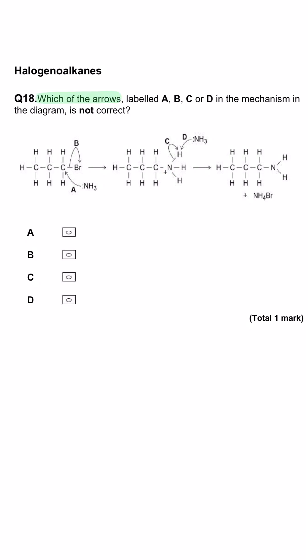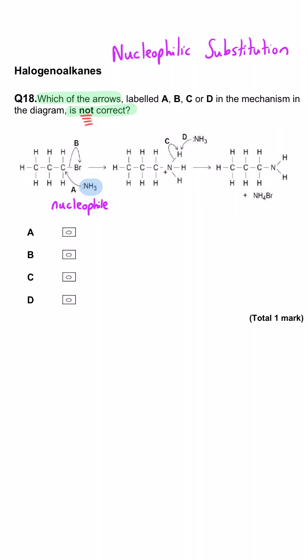Which of the arrows A, B, C, or D in the mechanism shown in the diagram is not correct? The mechanism being shown is a nucleophilic substitution. We've got an ammonia with its lone pair acting as a nucleophile, and eventually we end up making an amine, having substituted out the bromine, which forms ammonium bromide.